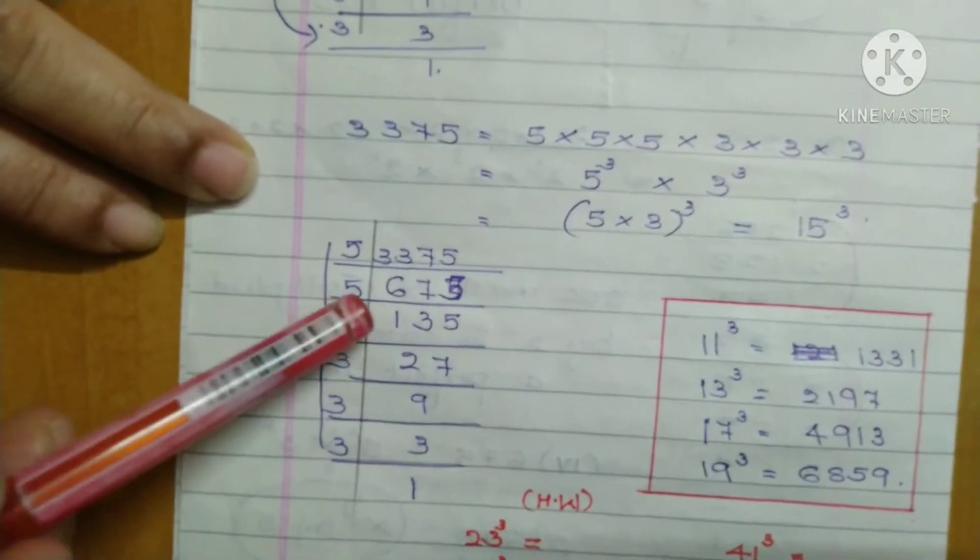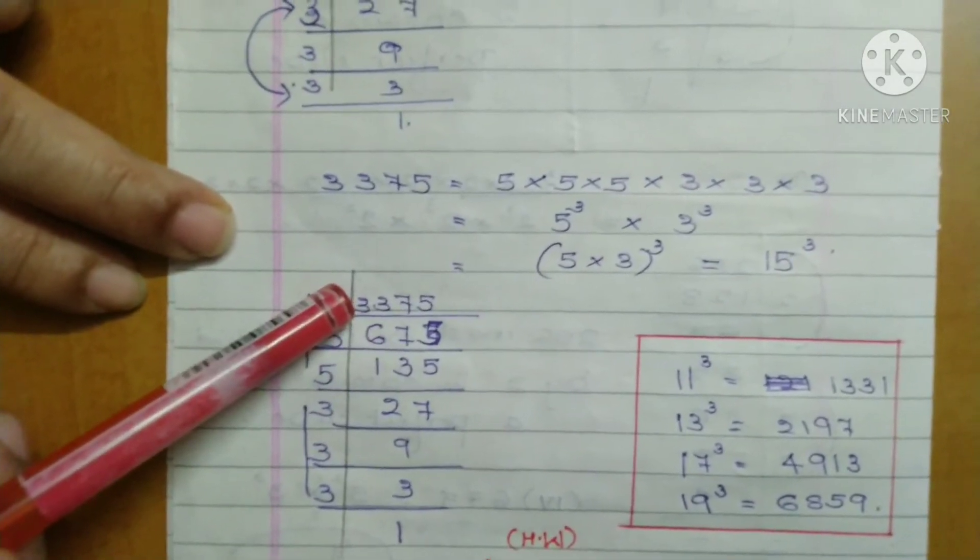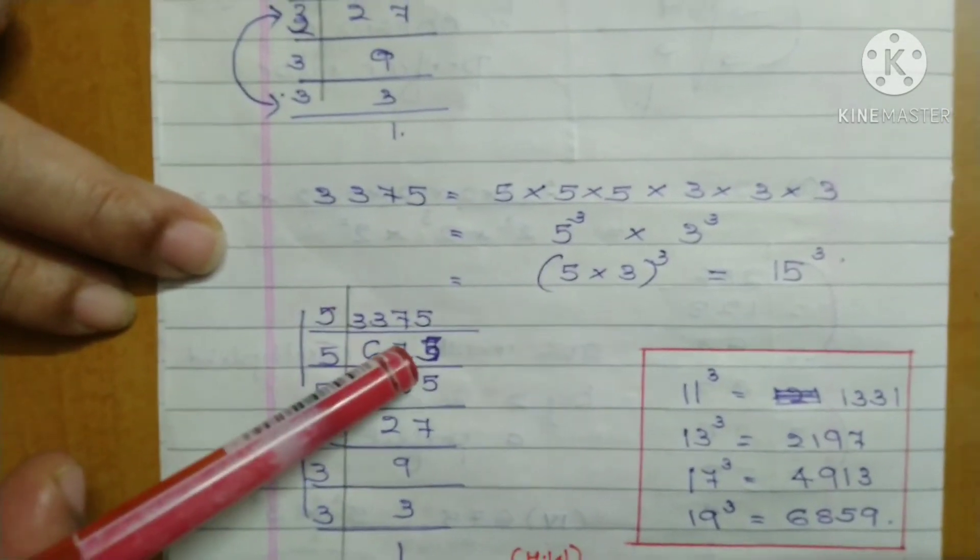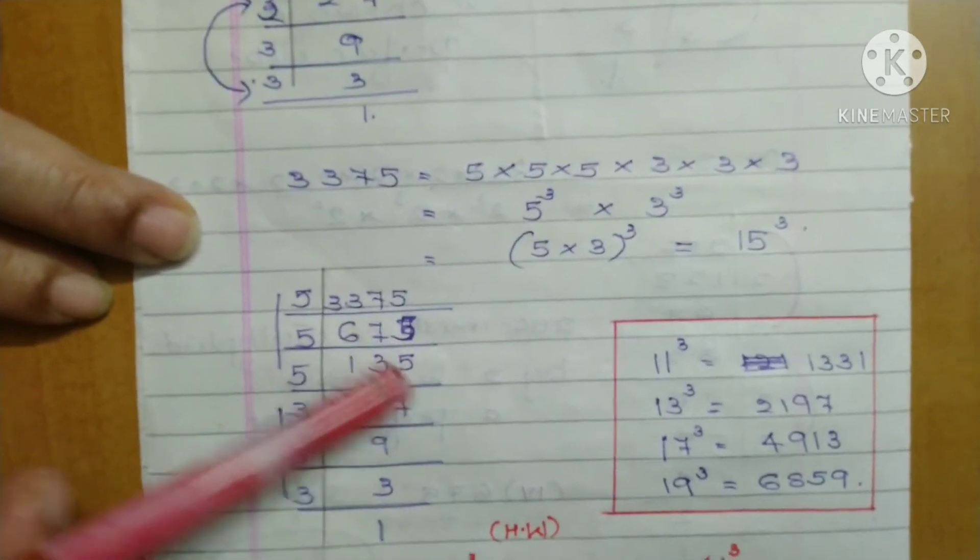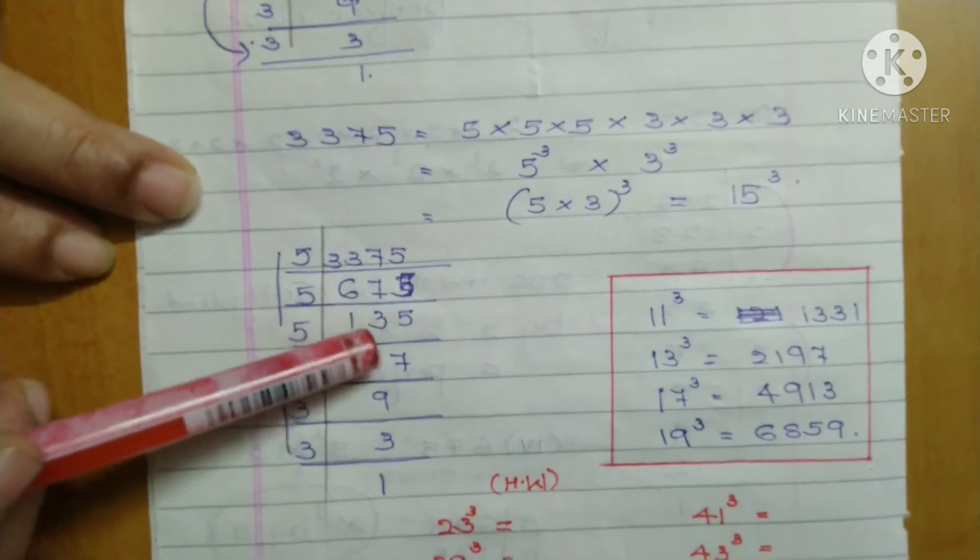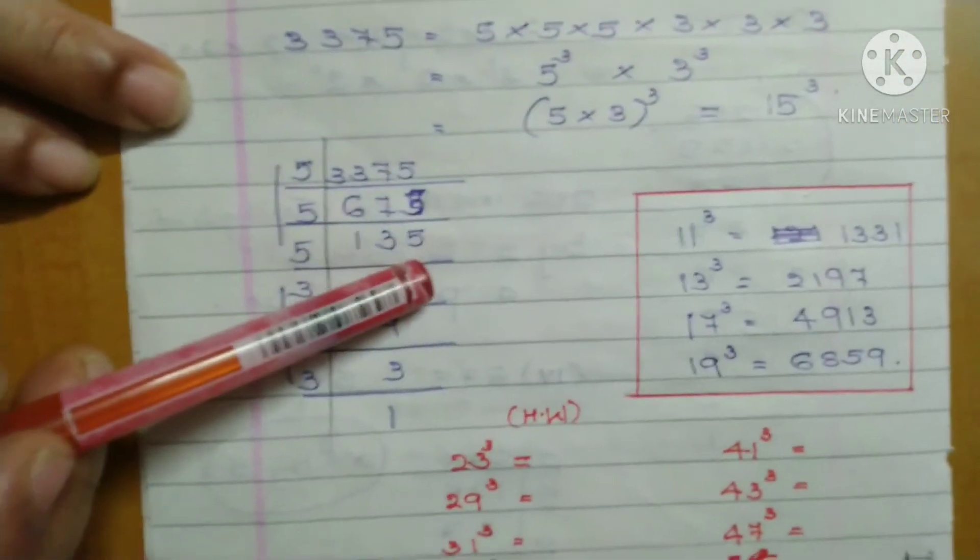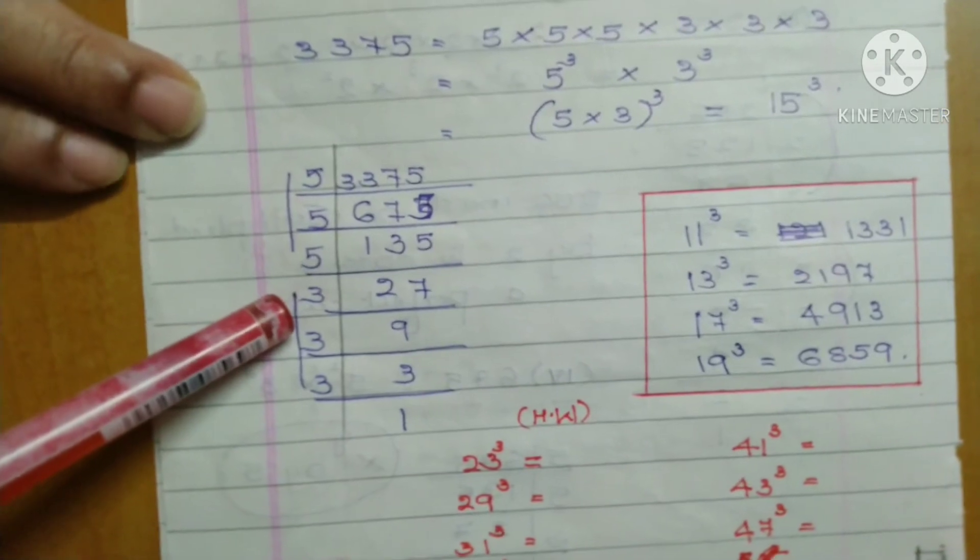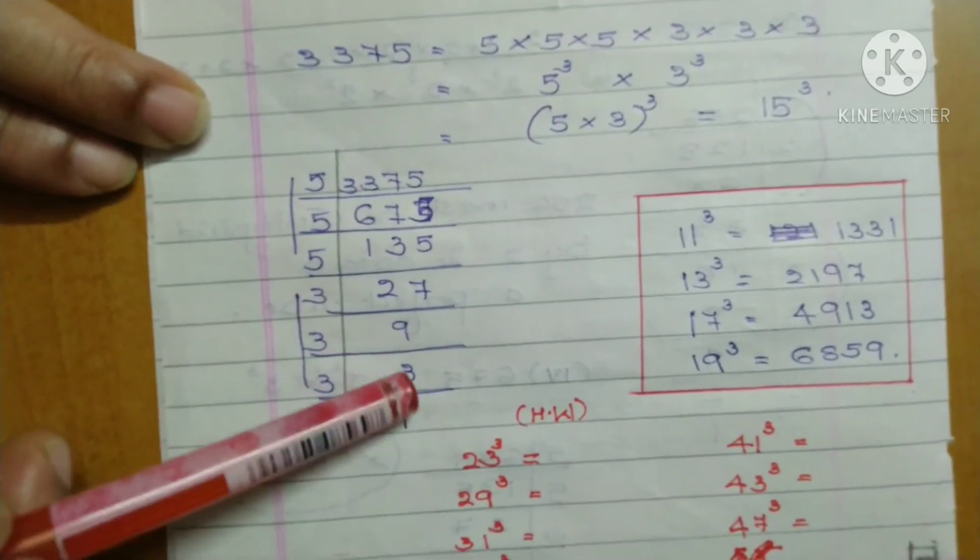Dividing by 5: 5 times 6 is 30 remainder 3, 5 times 7 is 35 remainder 2, 5 times 5 is 25. This gives 675. Again by 5 gives 135, again by 5 gives 27. Then divide by 3 to get 9, again by 3 gives 3.